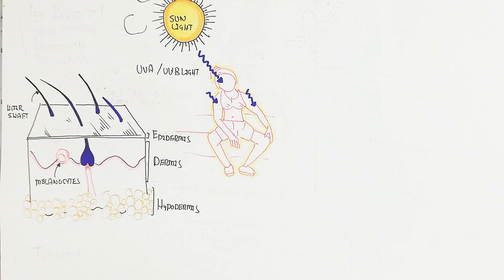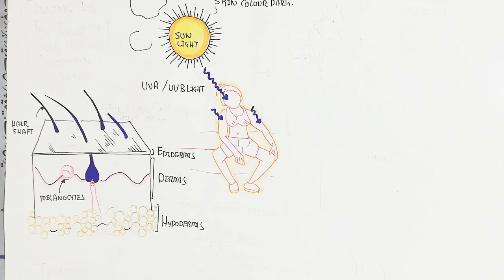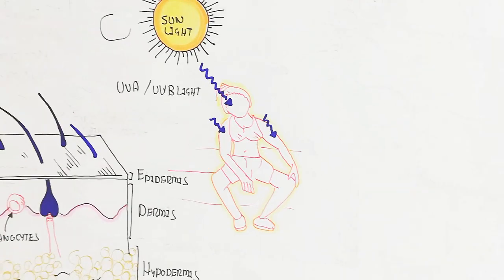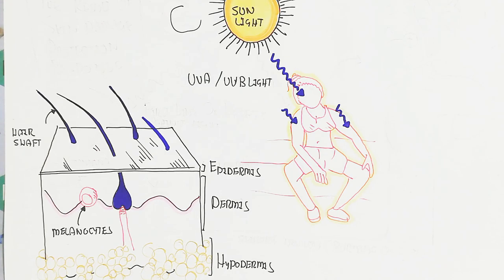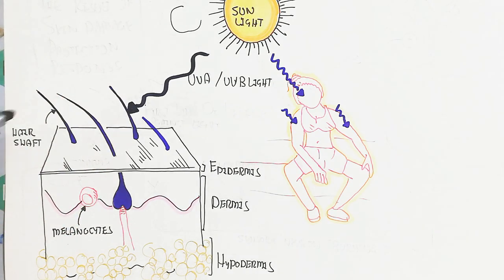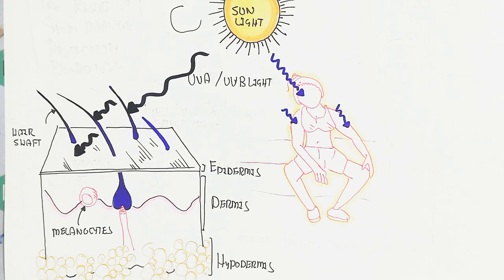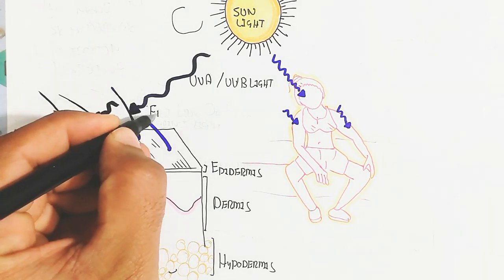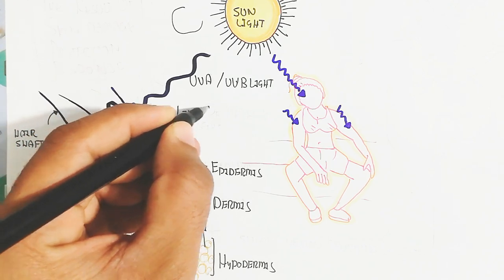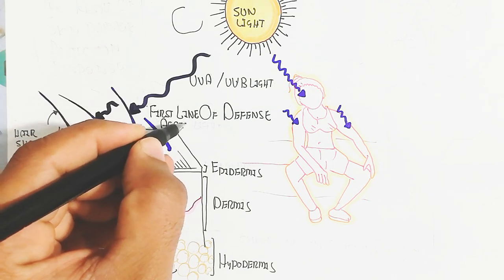Let's understand the physiological changes due to sunrays falling on the skin. When sunlight falls on the skin during sun bathing, the first line of defense against UV radiation is the hair shaft. The hair shaft will absorb the light and not allow it to enter the skin. Darker and denser hair will protect the facial and scalp regions. The whole body is sometimes covered with hairs for protection against UV light.